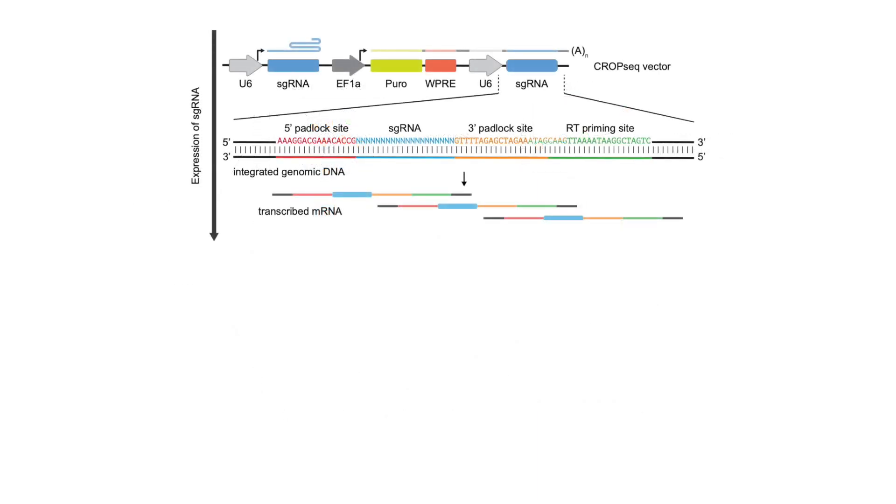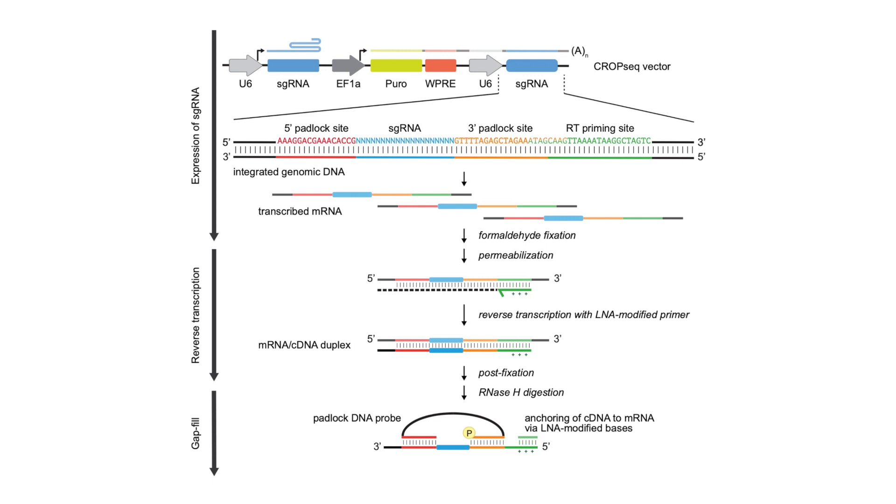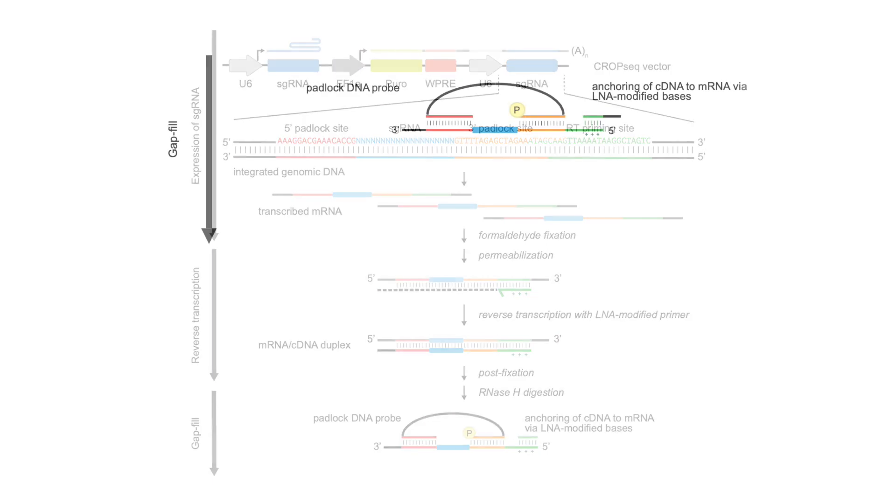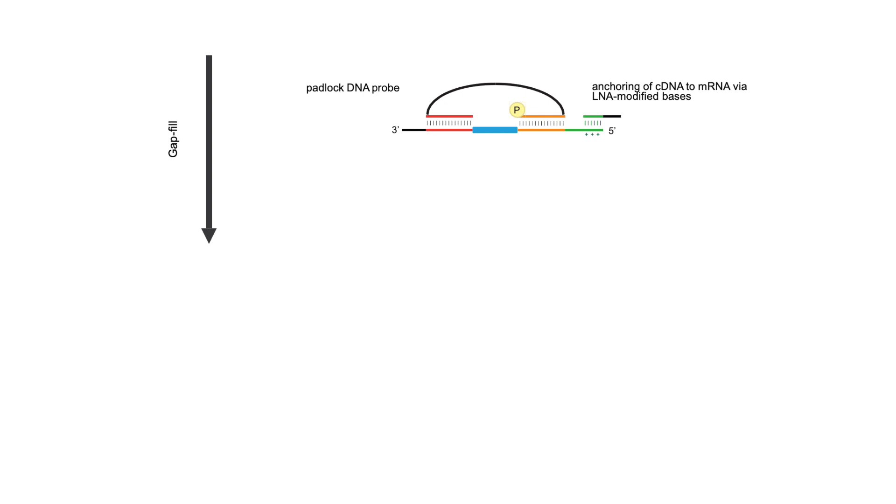To accomplish this, sequences identifying perturbations must be enzymatically amplified in-situ before sequencing. First, perturbations, or associated barcodes, are expressed as RNA inside cells. The cells are then fixed and permeabilized, and the RNA is reverse transcribed into cDNA. Next, during the padlock extension reaction, a padlock probe binds to constant regions in the cDNA flanking the perturbation. A polymerase then fills in the padlock gap, copying over the perturbation information, and the padlock is circularized by a thermostable ligase.